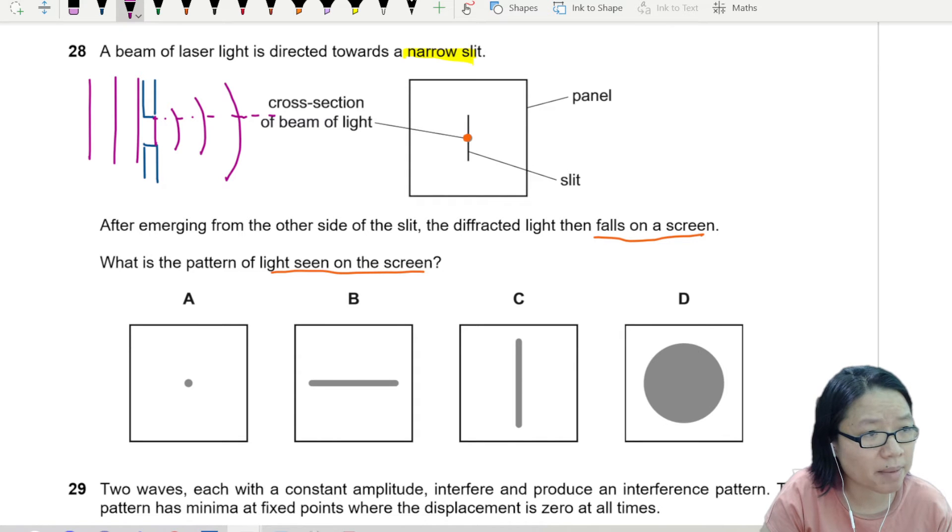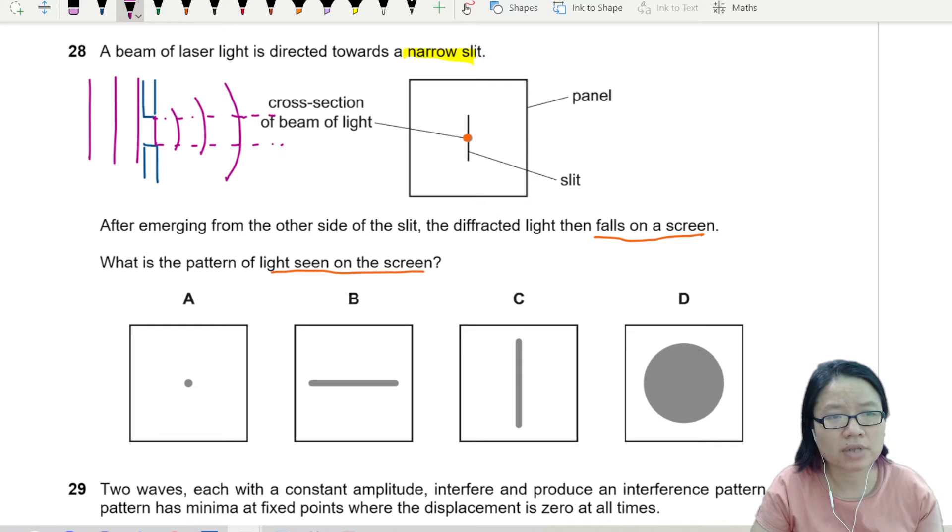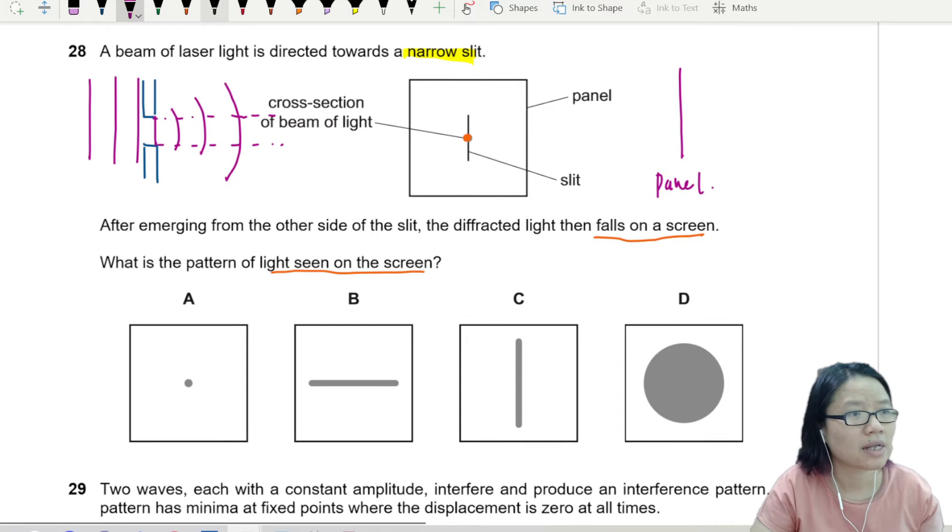This is the gap. And then it spreads out to the side. So now your gap looks like this. This is your hole, this is the slit here. So the spreading out happens horizontally. If let's say this is if I view from the top, and this is your panel, the light will come this way.